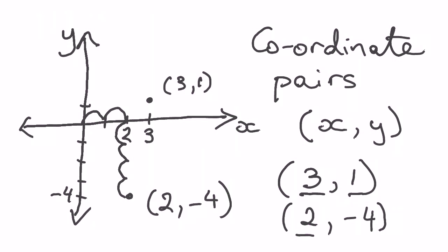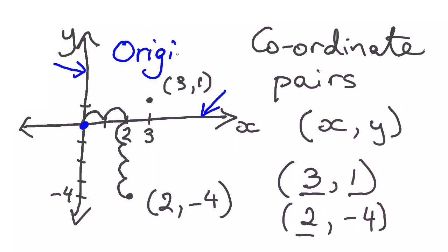As a reminder: the x-axis is this line here — it goes across horizontally. The y-axis is this line here — it goes up and down vertically. In the middle is a point called the origin. It's like a starting point. At the origin, x is 0 and y is 0.